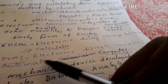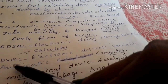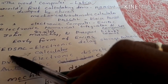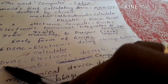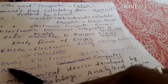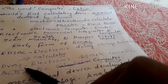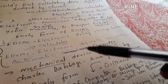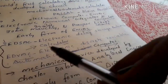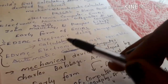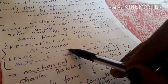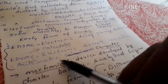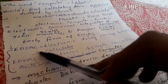EDVAC — Electronic Discrete Variable Automatic Computer. E for Electronic, D for Discrete, V for Variable, A for Automatic, C for Computer. So EDSAC is a calculator, and EDVAC is a computer. These are the stages of the computer.